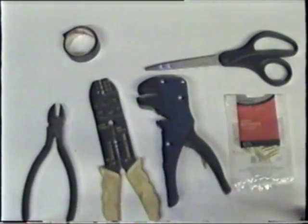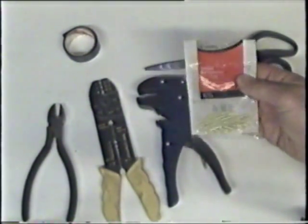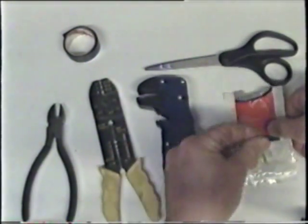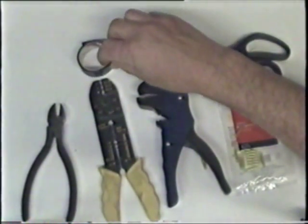You're going to need some telephone butt connectors that are 26 to 22 gauge wire, some scissors, and electrical tape.